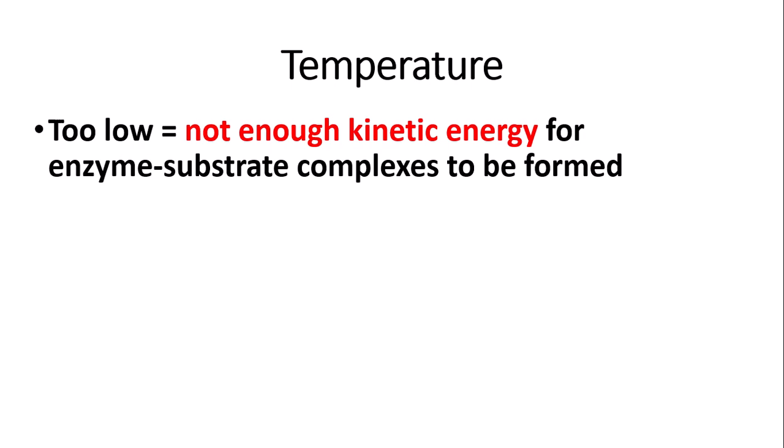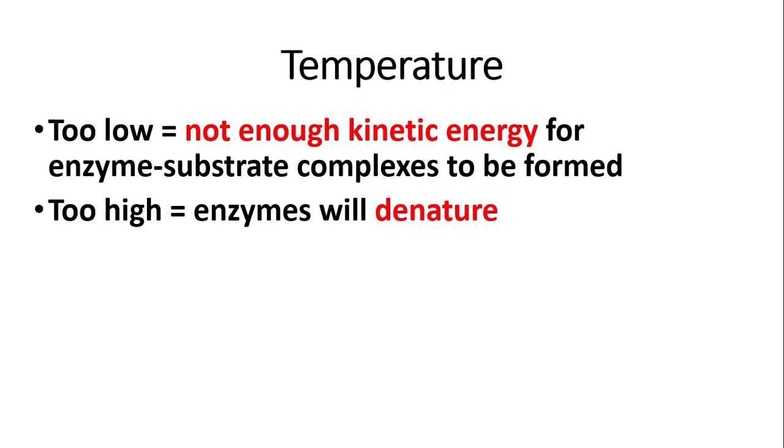Let's start with temperature. When temperature is too low, there is not enough kinetic energy for enzyme-substrate complexes to be formed, meaning the rate of critically important biological reactions is too slow. On the contrary, if the temperature is too high, enzymes will denature. For this chapter you don't need enzyme action in much detail, but some exam questions will require knowledge from the proteins and enzymes section. When temperature deviates from the optimum, the body reacts and returns it to normal.